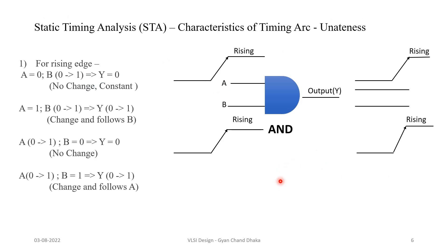Now let's take an example of an AND gate. In an AND gate there are two timing arcs: A to Y and B to Y. Whenever there is a rising transition happening at input B, if input A is 0, then Y will be 0 — there is no change, it is a constant value. If A is 1 and there is a rising transition at B, the output will also rise. So here the output will exactly follow B.